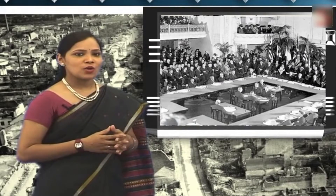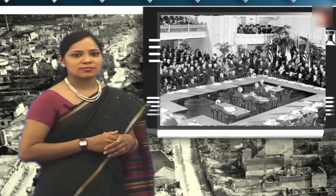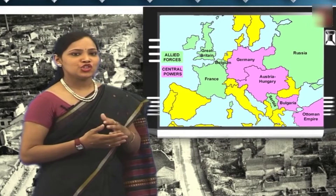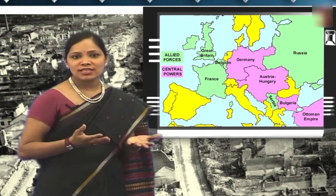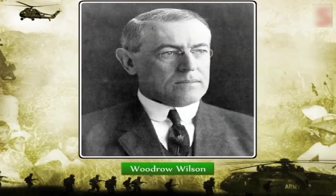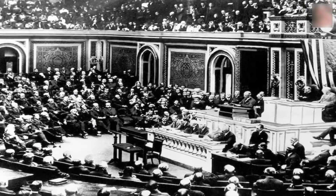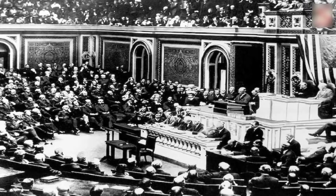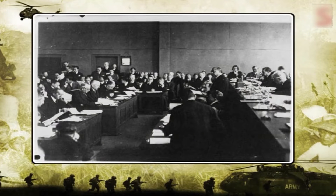Another important outcome of the Treaty of Versailles was the setting up of the League of Nations to prevent future wars. Russia and Germany were not members of the League, and USA could not become a member either. Woodrow Wilson of the US was an important figure in the formation of the League of Nations, but the US Congress did not accept his proposal. This is the reason that in 1934, the League had only 58 members.